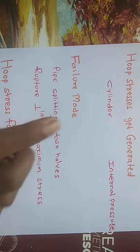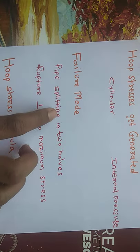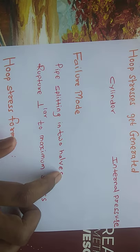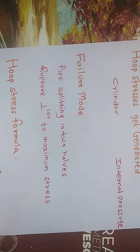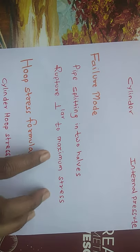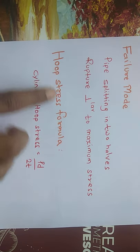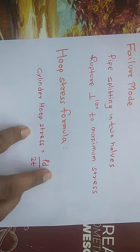The next point is the failure mode — how hoop stress causes failure in a structure. There are generally two failures: one is that the pipe or structure splits into two parts, which you can imagine from the figure. The second is rupture perpendicular to the maximum stress.